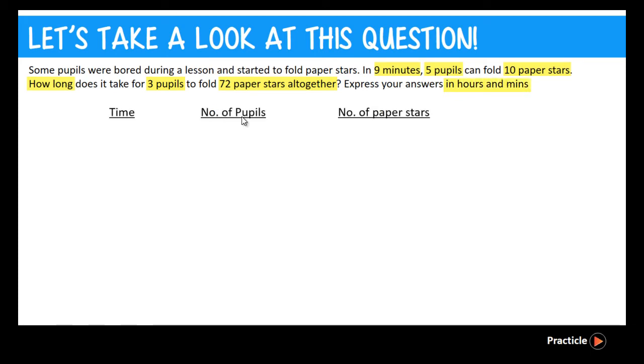So let's fill in the magic numbers, 9, 5 and 10. And then what are we supposed to find here? We are supposed to find the amount of time that 3 pupils take to fold 72 stars.